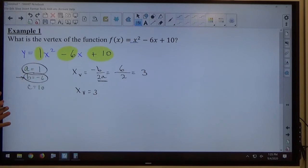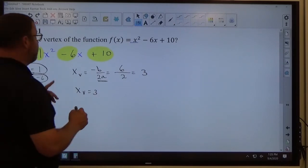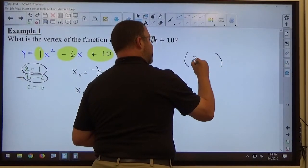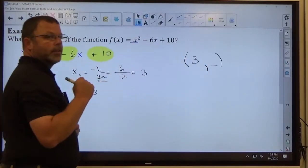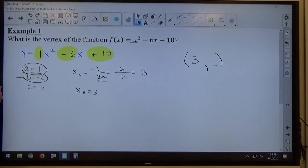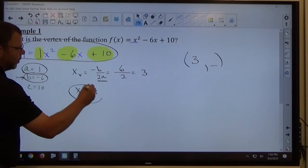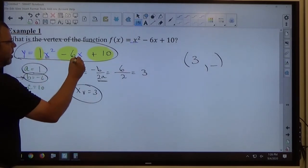x sub v is equal to 3. So, the other point we need once we get the x coordinate because we're trying to find the vertex. The vertex is an x, y ordered pair. We just figured out what x is. We need to know what y is. To find y, I go back to my function right here.